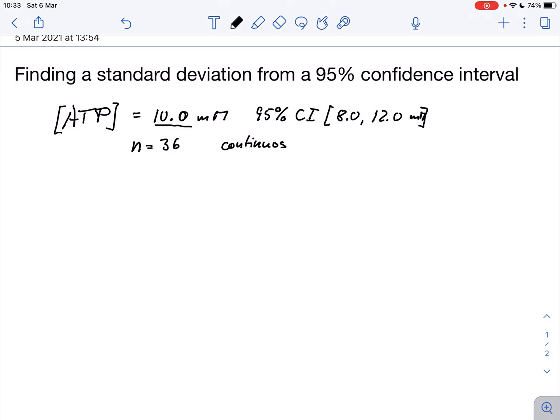Now we know that the 95% confidence interval, that these numbers here are derived from lower and upper bounds respectively. So the lower bound for this measurement would be 10.0 millimolar minus the margin of error and that gives us 8.0 millimolar. The upper bound is 10.0 millimolar plus the margin of error and that gives us 12.0 millimolar.